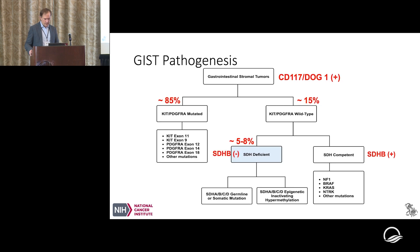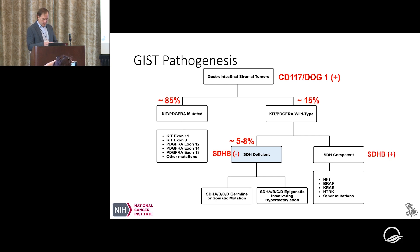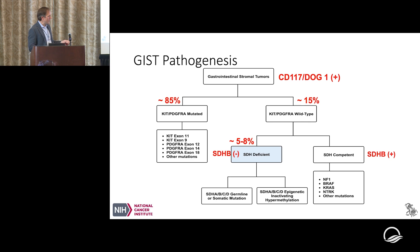Looking at a schematic overview: the majority of GISTs are associated with mutations in KIT or PDGFRA. The other 15% is wild type, and most of those are SDH deficient — about 5% to 8% overall. The way to differentiate between SDH-deficient and non-SDH-deficient is the SDHB staining. Within SDH deficiency, we differentiate subtypes A, B, C, and D.